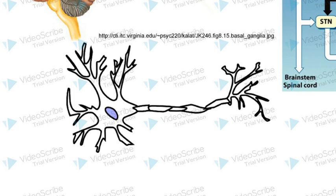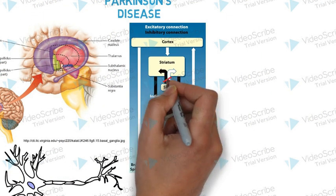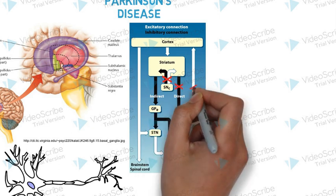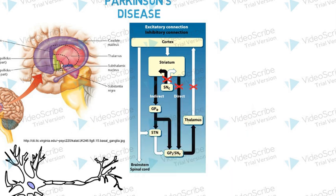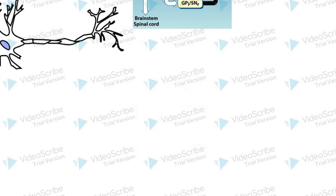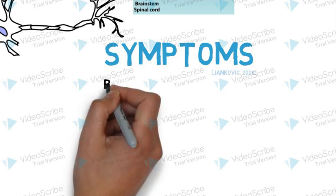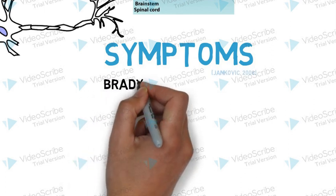Parkinson's is the second most common neurodegenerative disease, normally presenting in older patients. It is caused by selective atrophy of dopaminergic neurons in the substantia nigra, specifically the pars compacta. Inhibitory activity along the direct pathway is reduced, resulting in increased inhibition from the globus pallidus to the thalamus, which leads to reduction in cortical activity and movement.